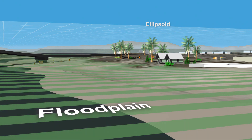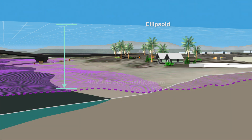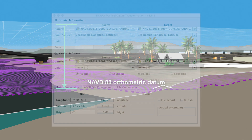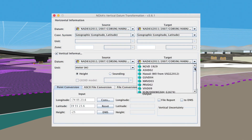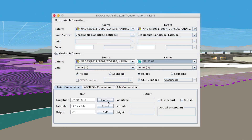Topography and gravity are both important in determining the direction water will flow. As a result, for applications like floodplain mapping, we need our data referenced to an orthometric height system, such as the North American Vertical Datum of 1988, NAVD88, which accounts for differences in gravity. Again, NOAA's VDatum tool allows us to transform the ellipsoid height of the base of our house — which was negative 25 meters — to an orthometric height of 11 meters in NAVD88.